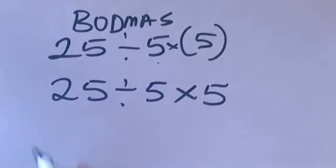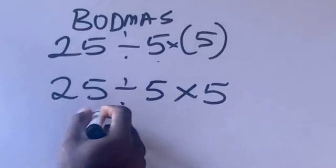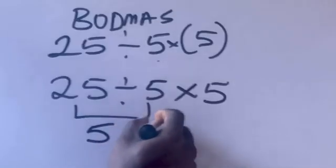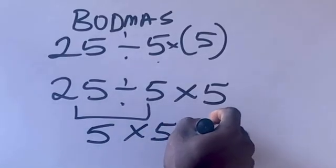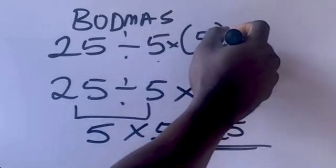So let's divide this. 25 divided by 5 will give us what? Five. And five times five is equal to what? 25. So our final answer is equal to 25.